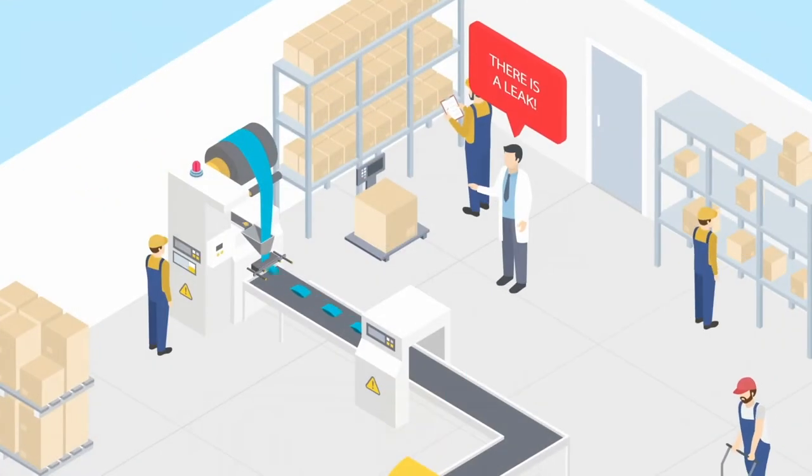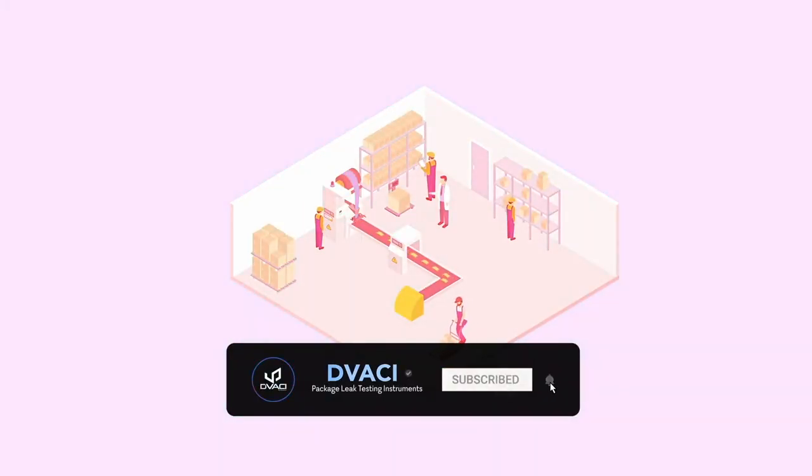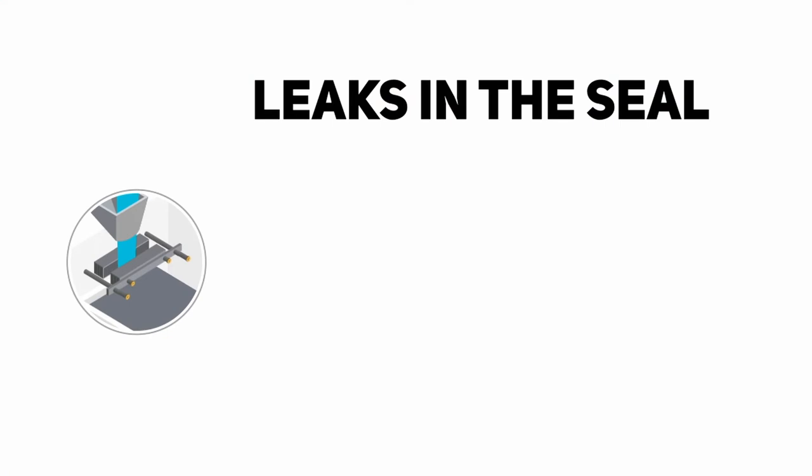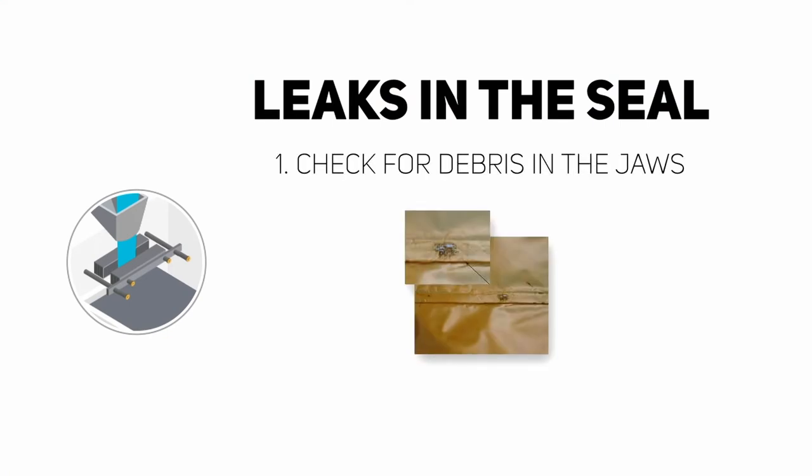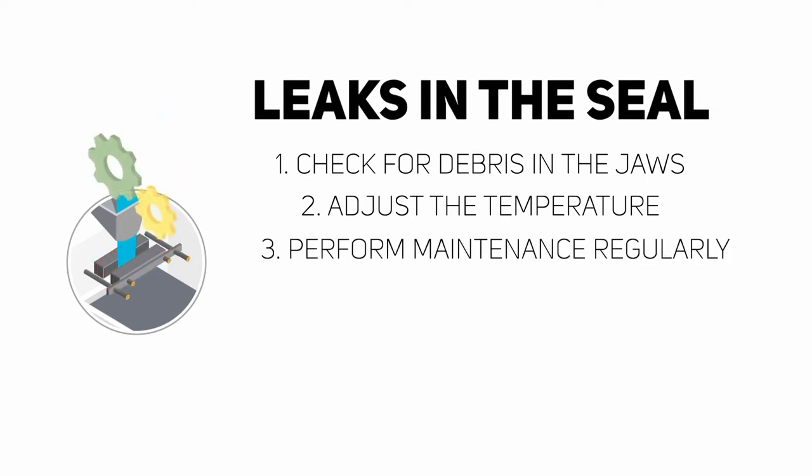So what to do if there are any leaks? The production must be immediately stopped. If the leak appears in the seal and is present several times, inspect the machine responsible for sealing the packages. Check for dust or debris in the jaws. Adjust the heat of the jaws to make sure proper adhesion or cohesion is achieved without damaging or melting the package. Perform preventive maintenance regularly.